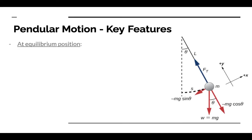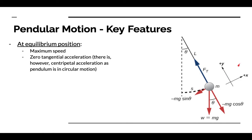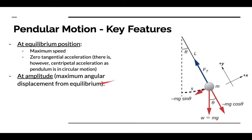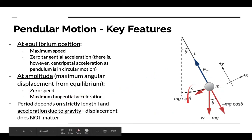Pendular motion key features. At the equilibrium position, we have maximum speed — that's because our gravitational force has acted as much as it can to pull us down, and once we pass the equilibrium position, that gravitational force is going to start trying to pull us back down. We have zero tangential acceleration at the bottom; there is, however, centripetal acceleration as the pendulum is in circular motion. At the bottom, the mg sine theta component is zero. We do still have circular motion, so we have centripetal acceleration from mg cosine theta and the tension force Ft. At the amplitude, which is our maximum angular displacement from equilibrium, we have zero speed but maximum tangential acceleration because we are turning around and mg sine theta is at its maximum value.